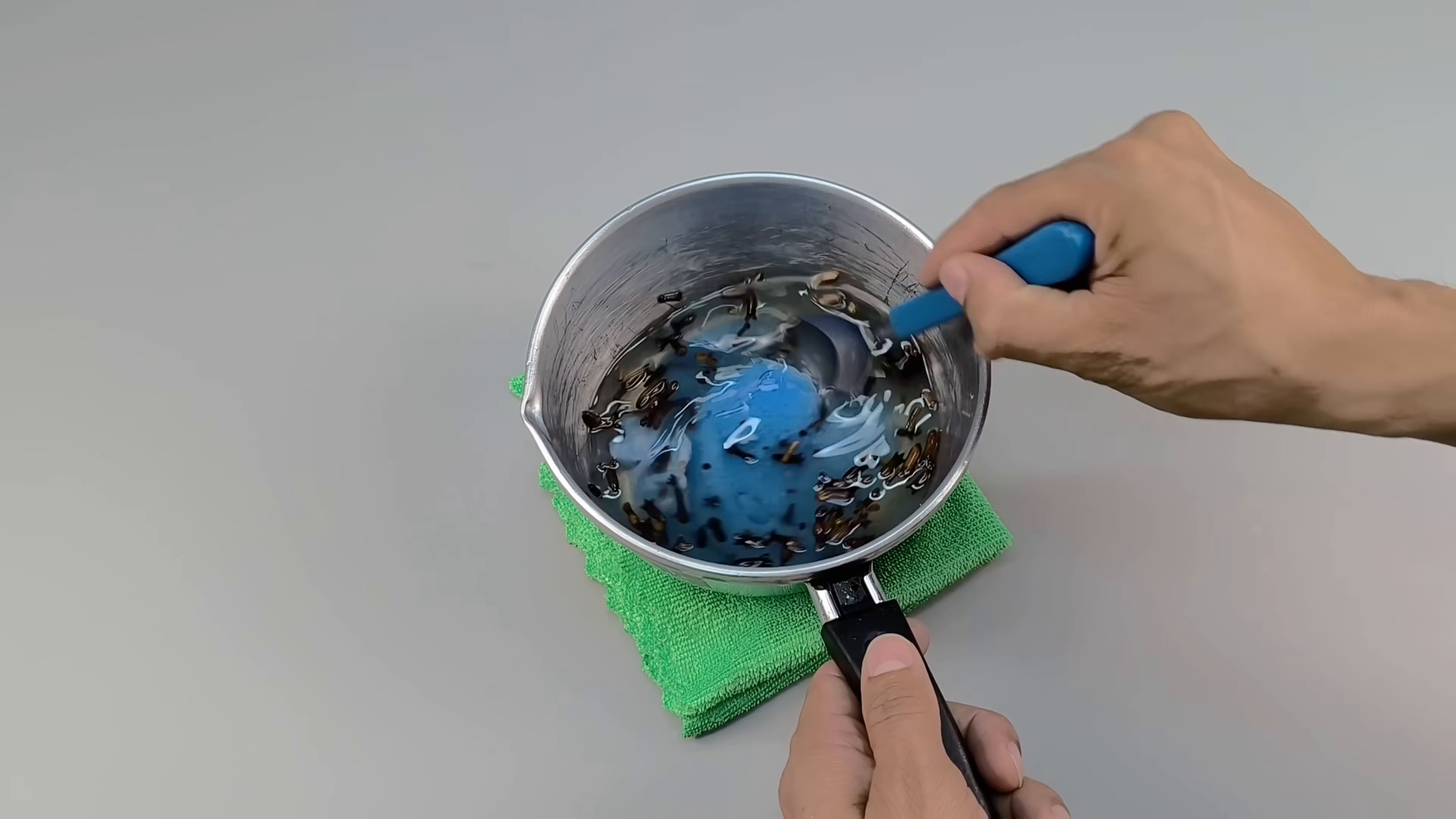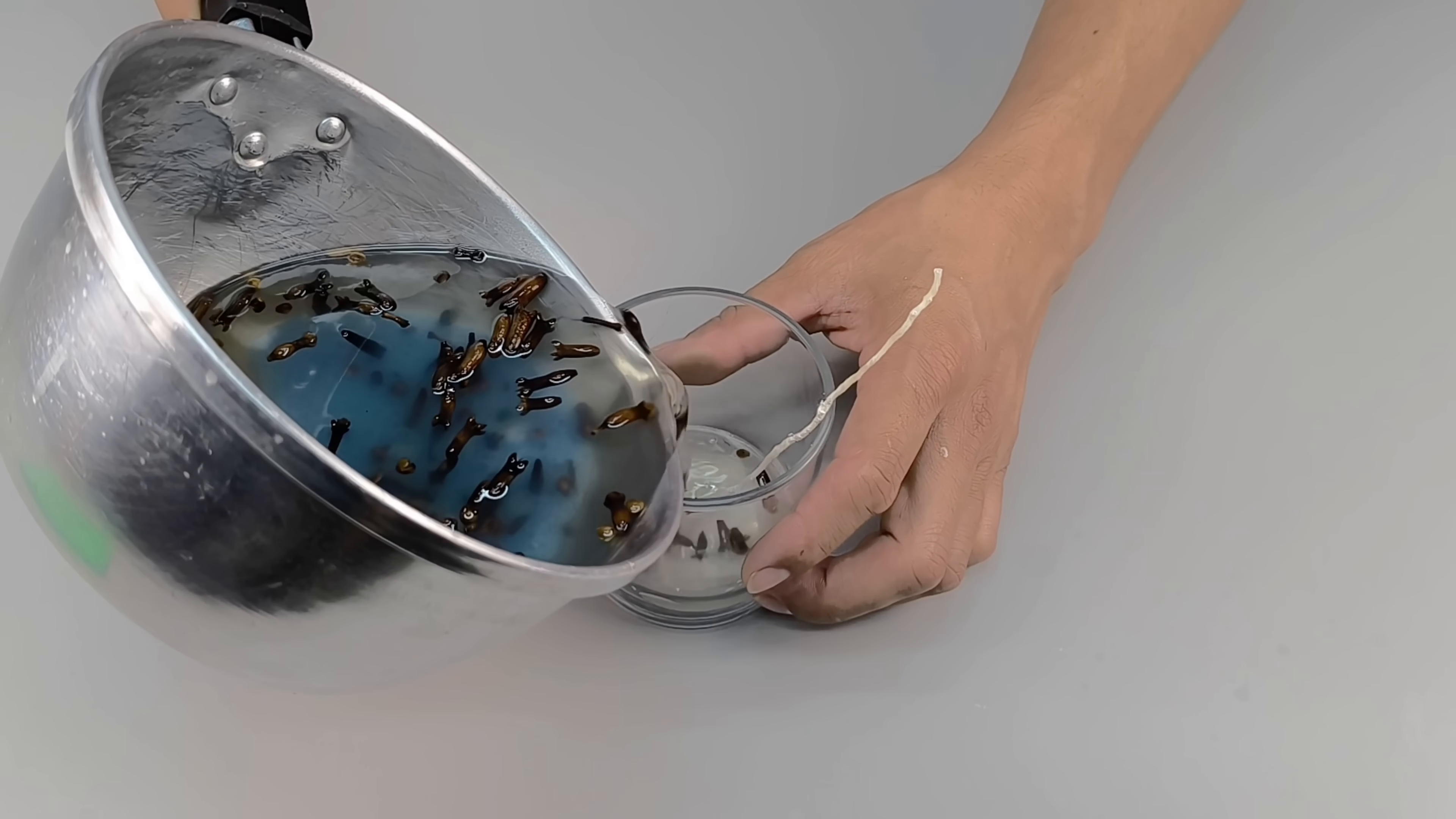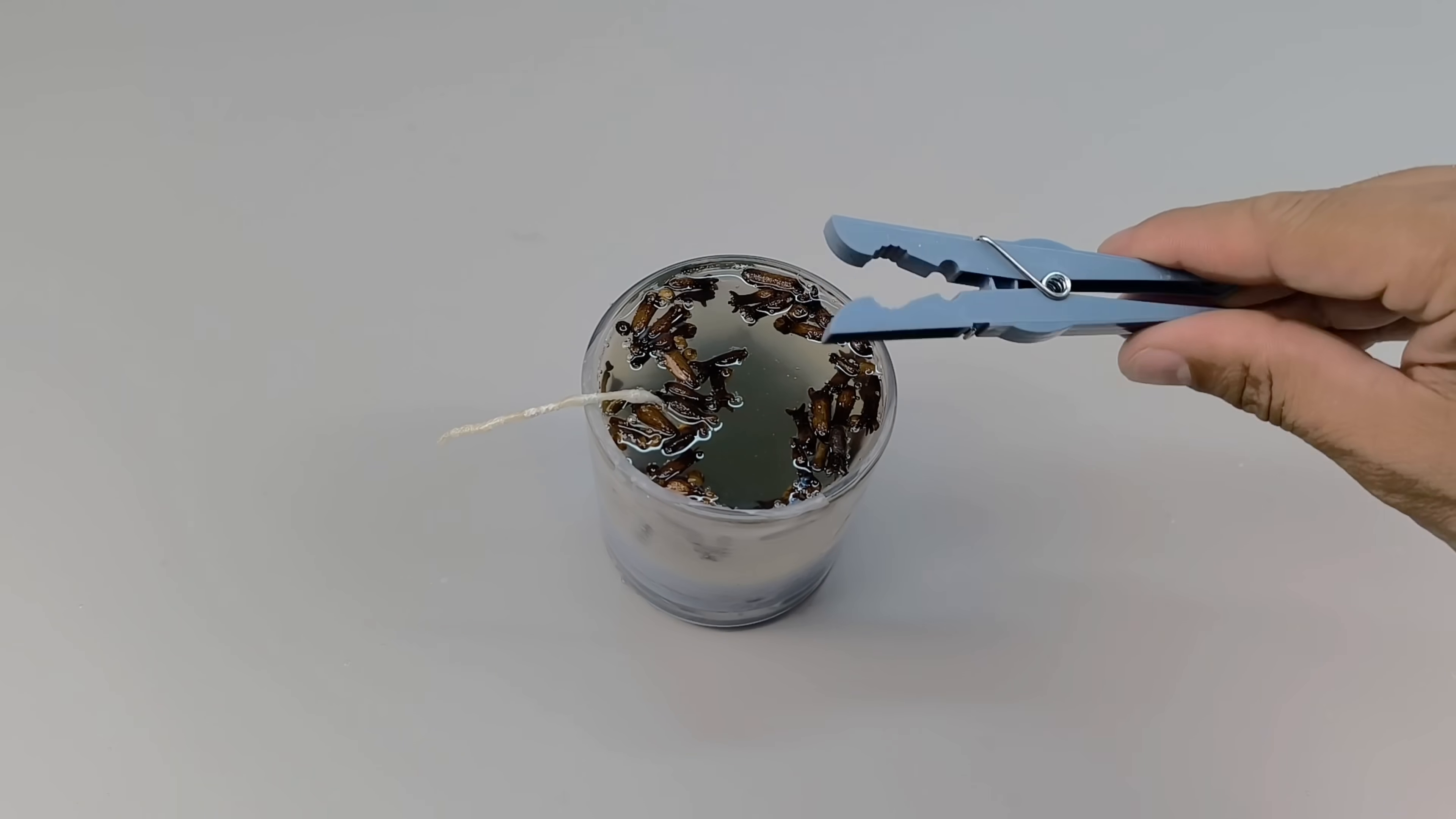Mix everything thoroughly, using gentle, continuous movements, until the texture is uniform and slightly creamy. Once this is done, it's time to carefully pour the wax into the cup you prepared with the wick fixed in the center. Pour slowly, in a continuous stream, until you reach the desired height in the glass. Try not to shake or touch the wick during the process.